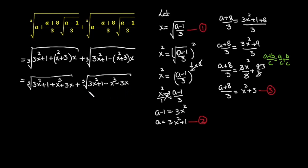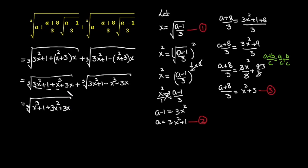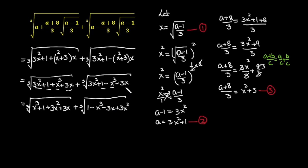Rearranging the terms inside the cube roots: the first becomes cube root of [x³ + 3x² + 3x + 1], and the second becomes cube root of [1 − x³ + 3x² − 3x], grouping all like terms together.